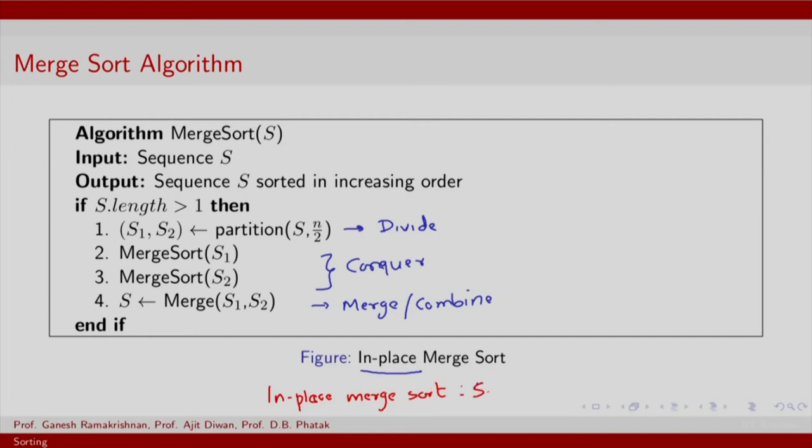So the idea is sort part of the array, part of S, and use rest as working area for merging. And this actually leads to slightly bloated complexity, which is order n square.